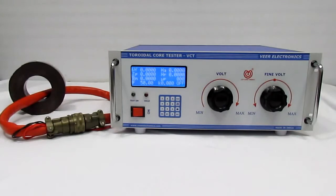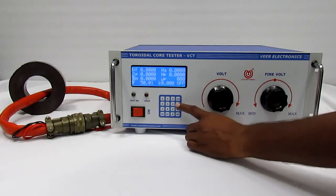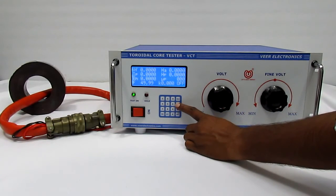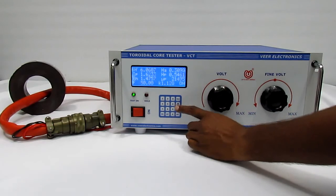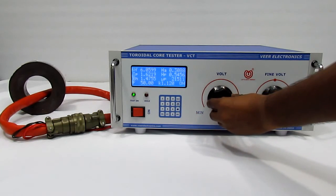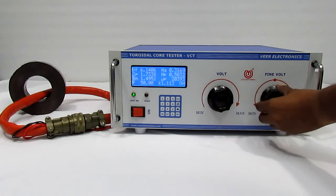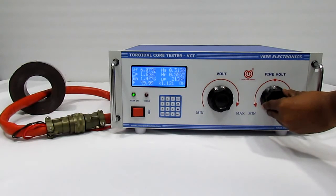Now press on-off switch to turn on amplifier. Now vary voltage knob to set flux voltage according to your required induction. Fine voltage knob is for fine tuning of flux voltage.